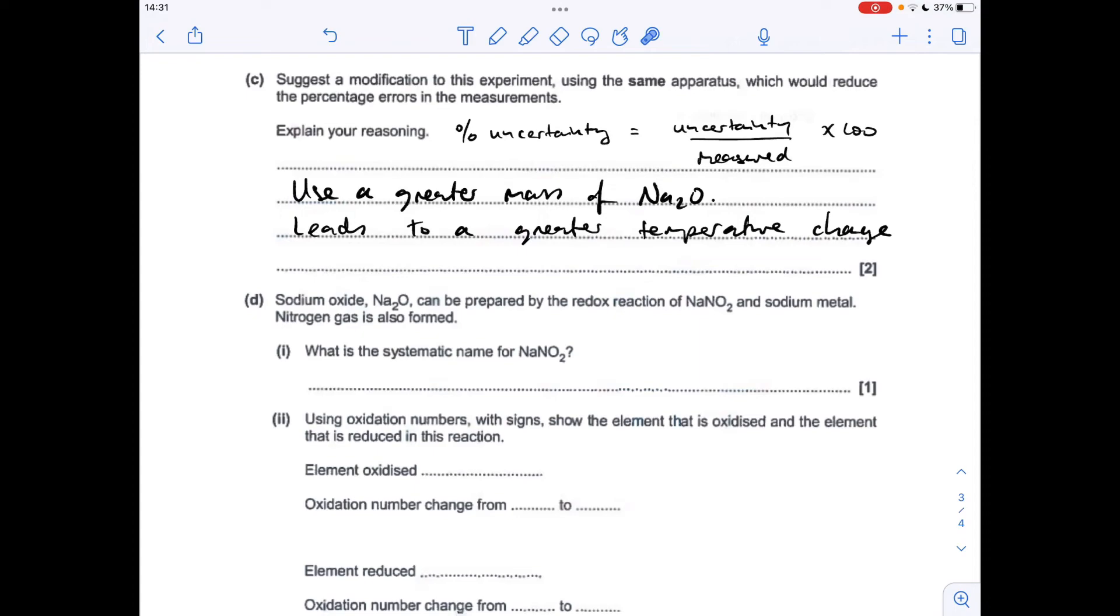So moving on to part D now, the redox aspect of the question. We've got to give the systematic name for this. So systematic names include the oxidation number in Roman numerals. So this is effectively a sodium nitrate. Nitrogen and oxygen is nitrate. But we need to just work out the oxidation number of the nitrogen. So the oxidation number of the sodium is fixed at plus 1. Group 1 elements all have plus 1 oxidation states. Oxygen in this is going to be minus 2 each. So we've got plus 1 with minus 4. Well to keep this thing neutral, the nitrogen needs to be plus 3. So its name is sodium nitrate with a Roman 3.